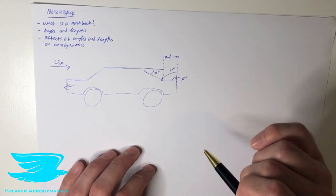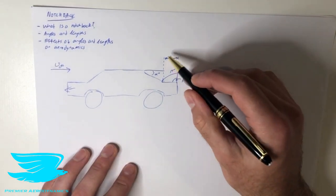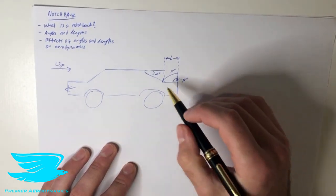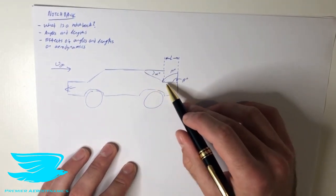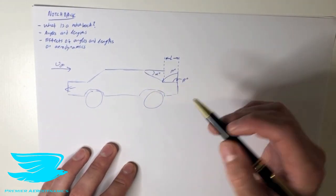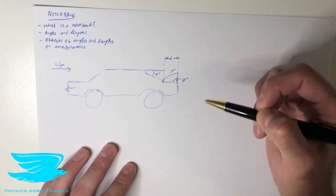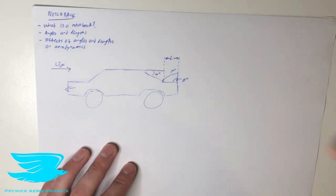We also have the length of the boot or the trunk. And this, again, affects the aerodynamics. So a notchback is one where we have a backlight, and we also have a trunk or boot. Whereas the fastback, if you remember, we didn't really have this boot or trunk section. It just really went down into a cutoff.